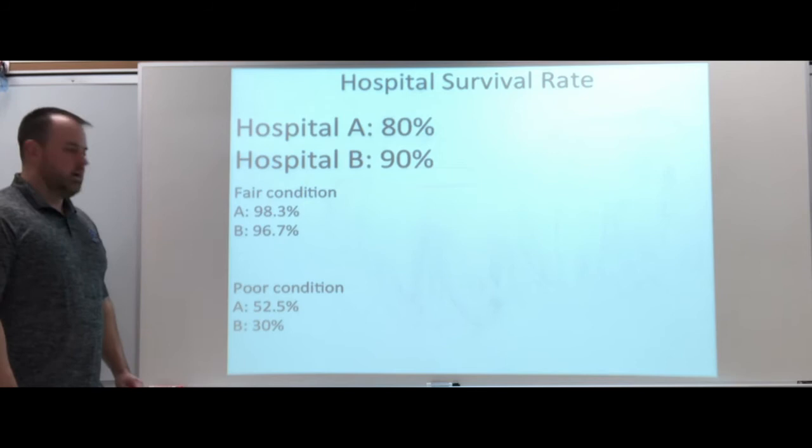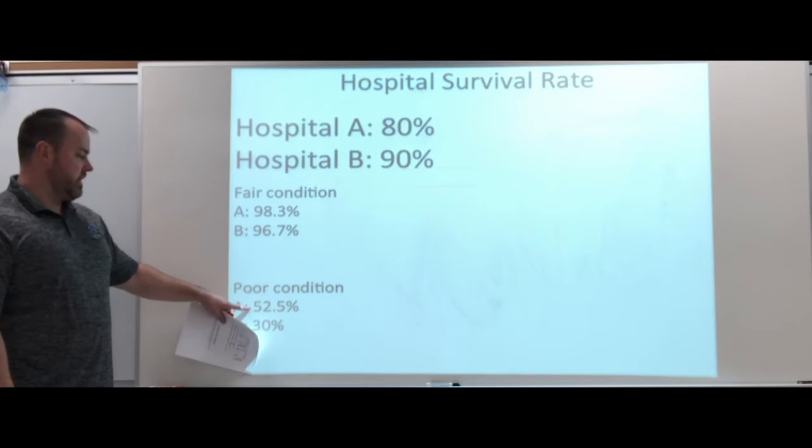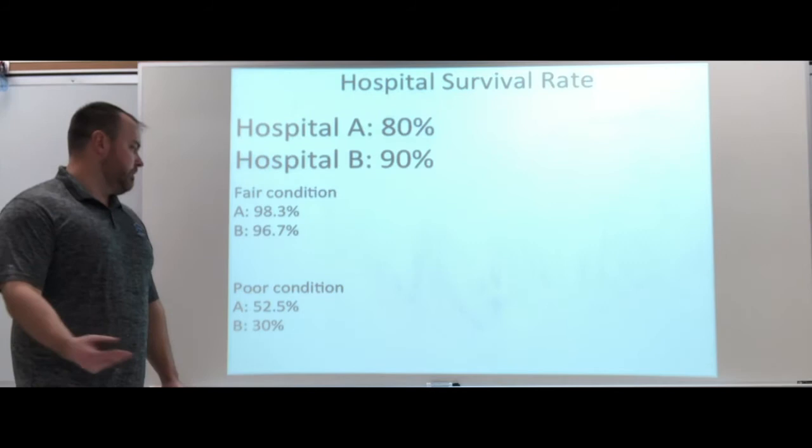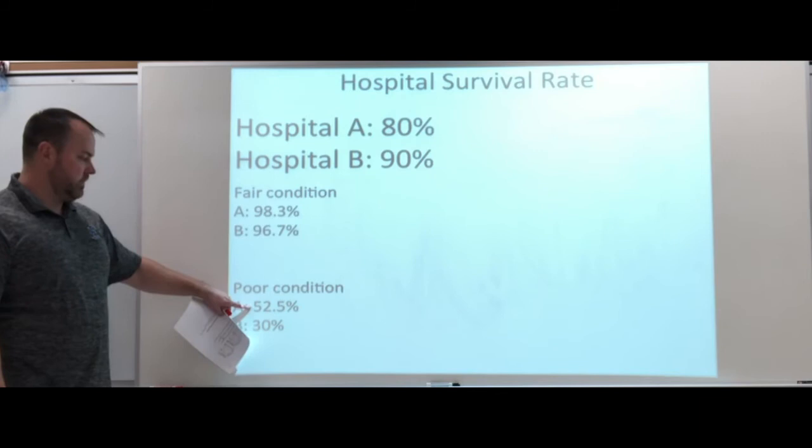Here we have poor condition. The poor condition B has a low rate of 30% compared to 52.5. These might be extreme car accidents that people are coming in from. And the rate of survival, much lower than the fair condition. 52.5 and 30%.